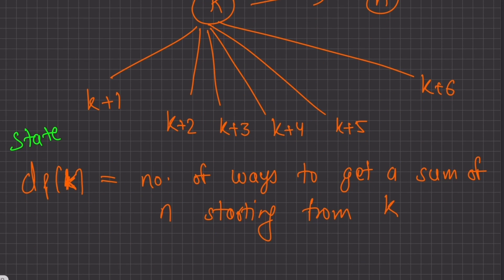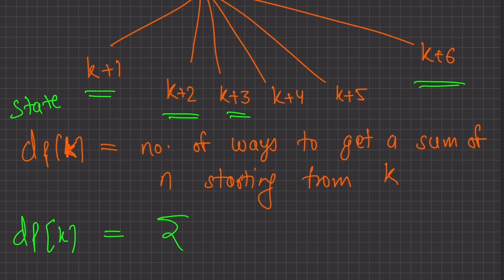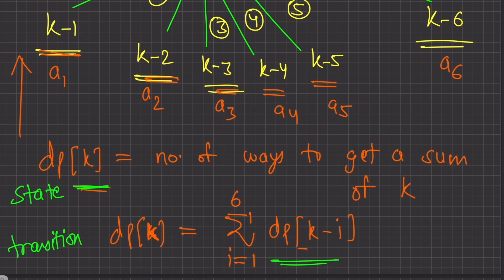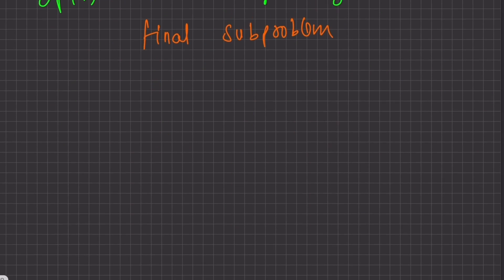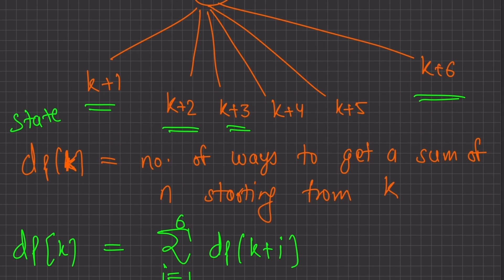What I know is that you can get from k to n via: k plus 1, k plus 2, so on up till k plus 6. So I can write: dp of k equals the sum of dp of k plus i, where i goes from 1 to 6. This is the power of the state — unless and until you define what is the meaning of your state, the transition doesn't make sense. And unless you define your bigger sub-problem, the lower sub-problems won't make sense.